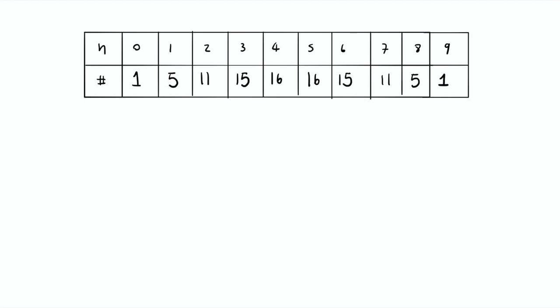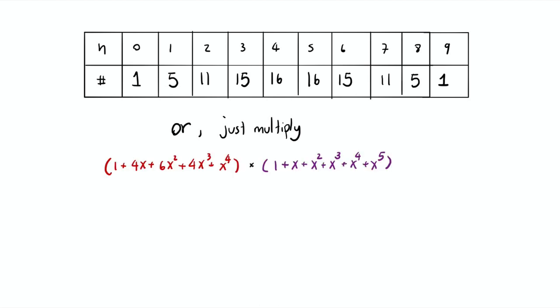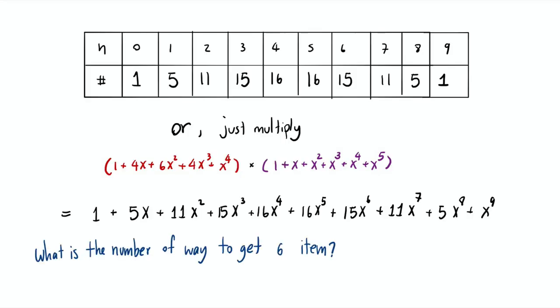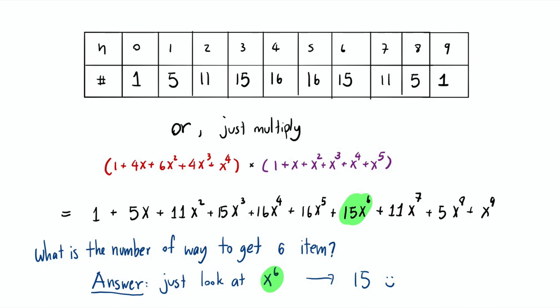If you know about generating functions, you can just multiply the generating function for shirts by the generating function for socks to get the combined generating function for picking shirts and socks together. When you multiply the two generating functions out, you get a result that tells you how many ways you can get n items for all possible n. For example, how many ways can we get 6 items? Look at the coefficient in front of x to the 6th — the answer is 15. Just remember that a generating function is a fancy way to write a table.